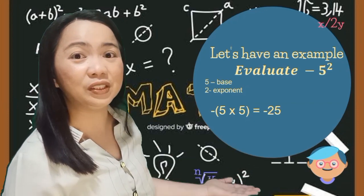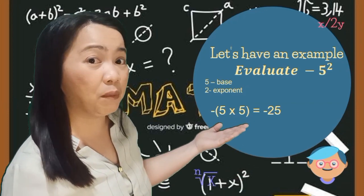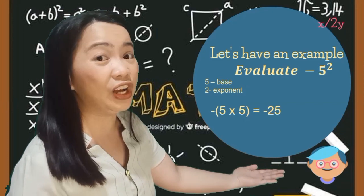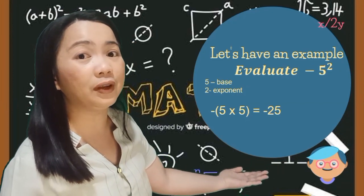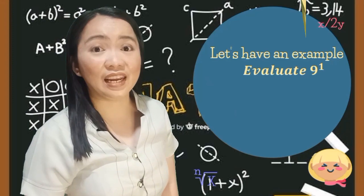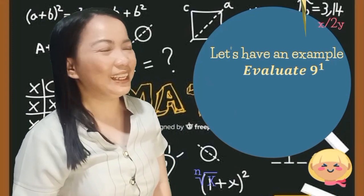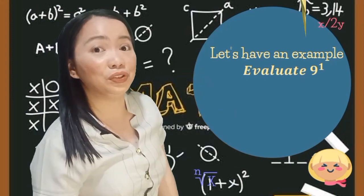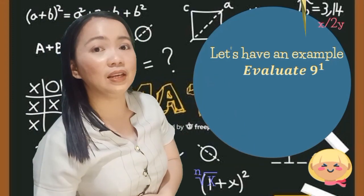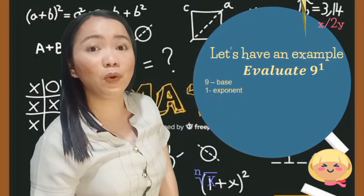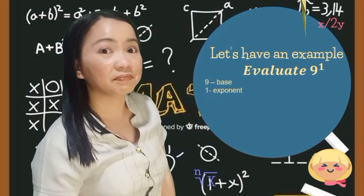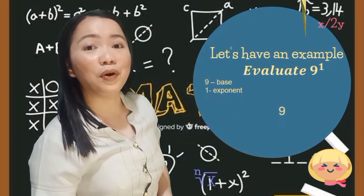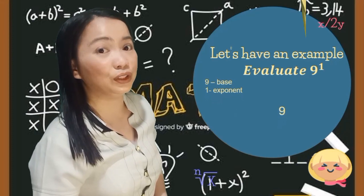That is the difference between a negative number written inside parentheses and one that is not. What if we have 1 as our exponent? Let's evaluate 9 raised to the first power. 9 is our base and 1 is our exponent, and that means the answer is simply 9. So any number raised to 1 is equal to the number itself.